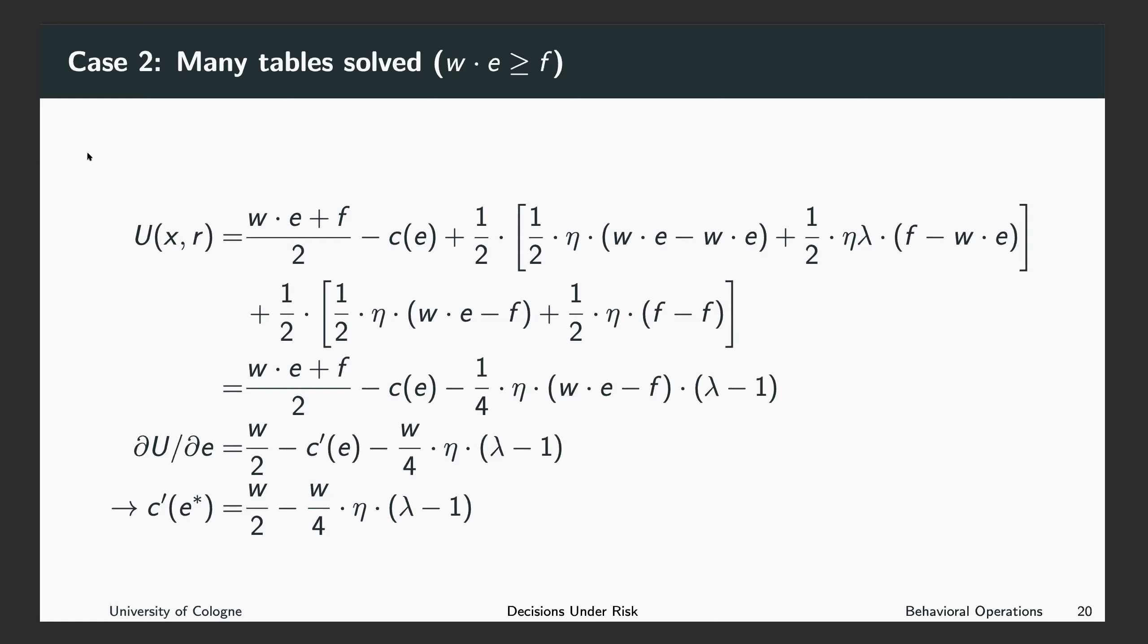Let us continue with the second case. In the first case, we looked at the situation where you solved only a few tables. Now we are looking at the setting where you already solved many tables, which means that you are better off when you get the piece rate than when you get the fixed payment.